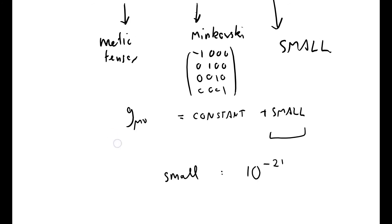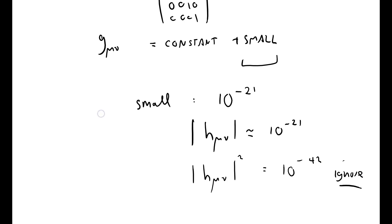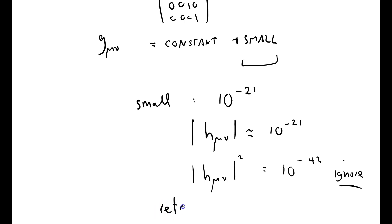So the size of the elements, modulus of h_μν, is approximately 10 to the minus 21, which means that if I've got a term of order that's squared, which is 10 to the minus 42, I can just ignore that. So I'm only going to retain terms of the first order. Retain terms of the first order.